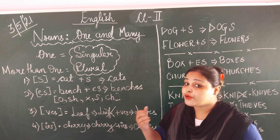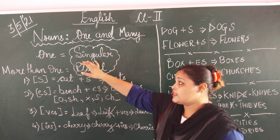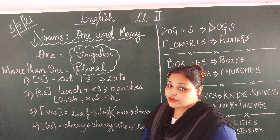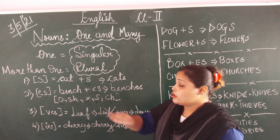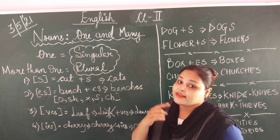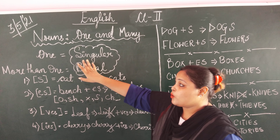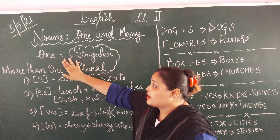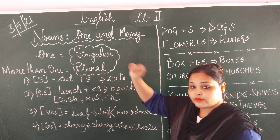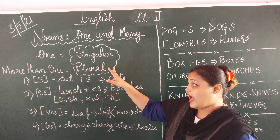Now we are going to see singular and plural nouns. When there is only one thing, it is a singular noun, and when there is more than one thing, it is a plural noun. To remember this: from singular, just take the word 'single' — single also means one thing. So single equals one, meaning for one it is always singular, and for more than one it is always plural.